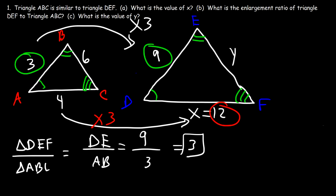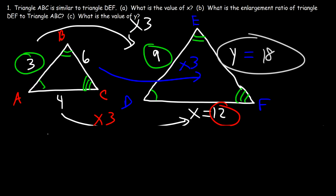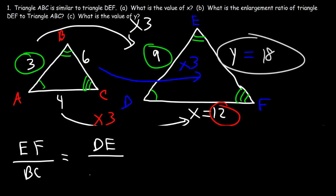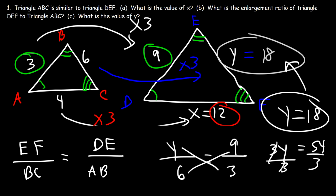To go from AC to DF we multiply by 3: 4 times 3 gives us 12. We can use that to find y: 6 times 3 gives us 18. We can confirm this with a proportion — EF over BC equals DE over AB, so y over 6 equals 9 over 3. Cross-multiplying: 3y equals 54, so y equals 18.